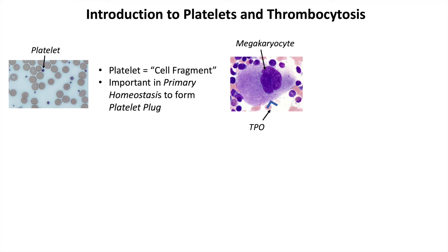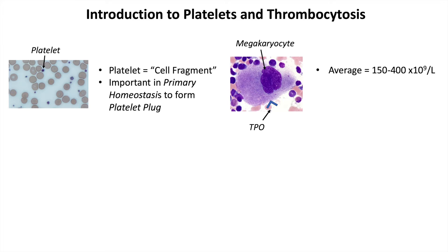On average, we have approximately 150 to 400 × 10⁹ platelets per liter of blood, and the average lifespan of a platelet is approximately 8 to 9 days.